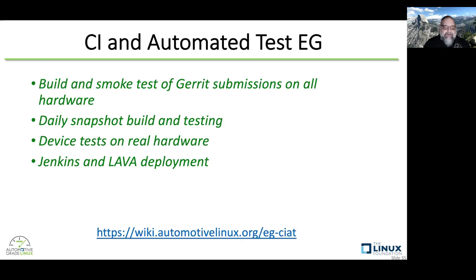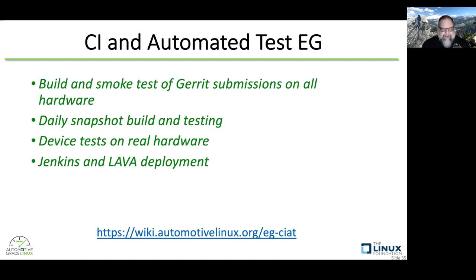The continuous integration and automated test expert group — not least by any means — Jan-Simon leads this. They smoke-test every patch that gets submitted: every patch gets built and smoke-tested on all hardware using our LAVA setup. They basically manage our Jenkins and LAVA deployment, do daily snapshot building and testing, device tests on real hardware, and manual tests that get performed weekly. We get a test report every week. As we manage the transition to GitLab, that'll be managed out of the CIAT expert group.